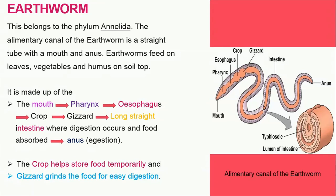Let's talk about the earthworm. Earthworms belong to the phylum Annelida. The alimentary canal of the earthworm is a straight tube with a mouth and an outlet called the anus. Earthworms feed on leaves, vegetables and humus in the soil. The alimentary canal consists of: the mouth, used for ingestion; the pharynx; the oesophagus, which serves as a passage for food from the mouth to the crop; the crop, used for storing food temporarily; and the gizzard, which grinds the food. From the gizzard, food passes into the long straight intestine where digestion occurs and food is absorbed, and the waste is removed through the anus.